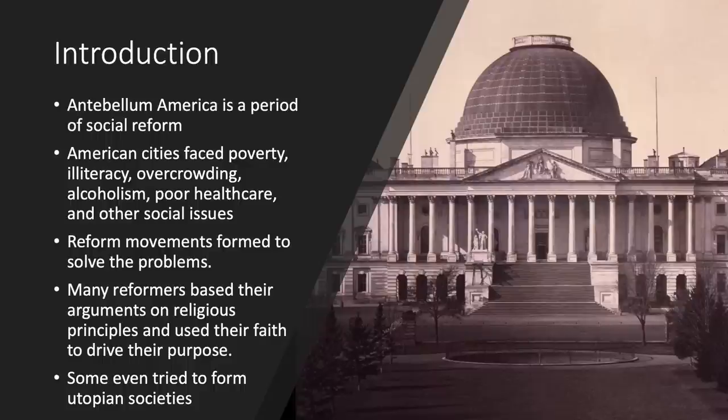During this period, Americans wanted to reform the country, meaning they wanted to improve the nation and address problems plaguing society such as overcrowding, poverty, illiteracy, alcoholism, and poor health care — issues developing as the country began to change due to industrialization. For many, these reform movements were reflections of their religious principles and faith, motivated largely by a revival of religious participation known as the Second Great Awakening. People wanted to extend personal improvement to national improvement, some even trying to build utopian societies dedicated to perfection.